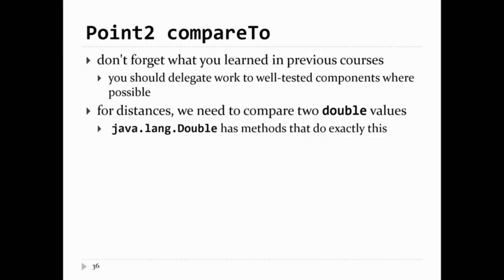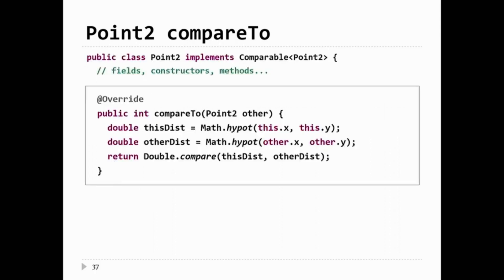You can actually avoid that if statement because the Double class has a compare method that does exactly what you want. Inside all of the wrapper classes — Integer, Double, Float, etc. — they all know how to compare values of their type. Double knows how to compare two double values and return a value suitable for use with compareTo. The method is called compare: it compares two values and returns negative, zero, or positive. So this is really easy to implement — you just rely on the methods provided by the standard library. That's why the standard library is there.